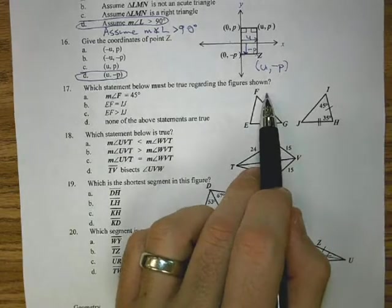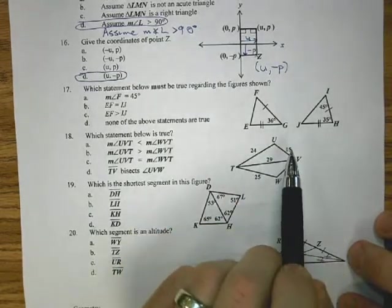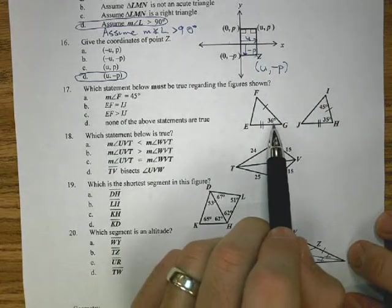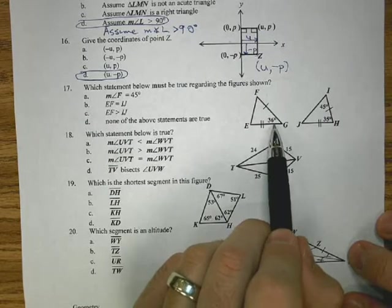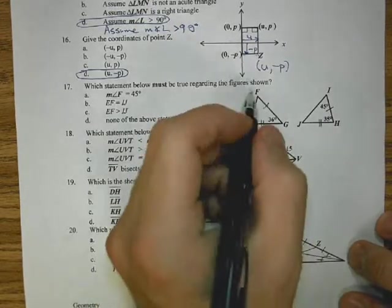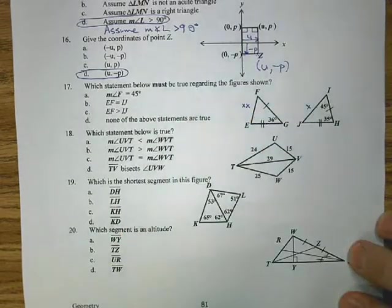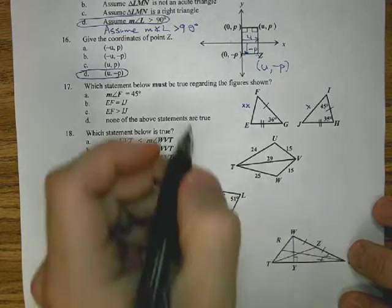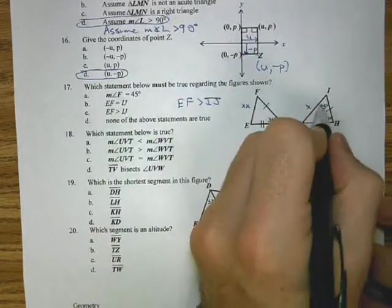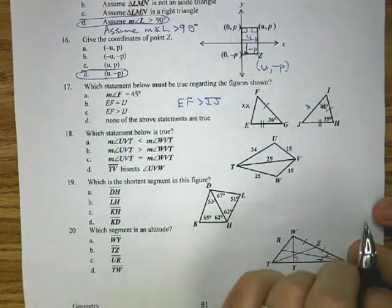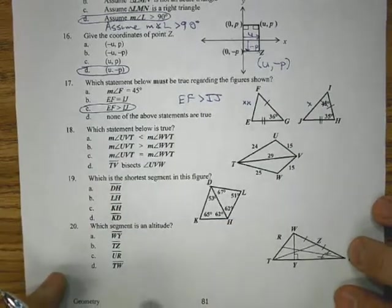17. Which statement must be true regarding the figure shown? I have two sets of sides that work, these are like the arms. I have 36 degrees, 35 degrees. If I notice, these arms are open a little bit more, because they're 36 as opposed to 35. That means this side EF will probably be a little bit bigger than IJ. So EF is going to be greater than IJ. 45 we don't really need it. So EF is bigger than IJ, and that's C, our answer.